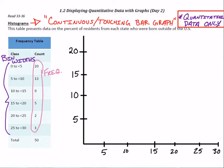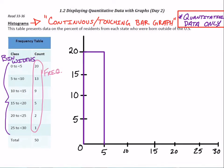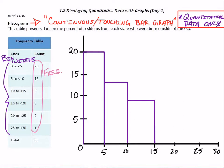Let's make our first bar — it goes all the way up to 20. From 0 to 5, there's the first bar for the histogram. Then 5 to 10 goes up to 13. And then 10 to 15, we go up to 9, just below the 10. 15 to 20 has only 5 states, so frequency is 5. 20 to 25 has 2 states, and then 1 state in the 25 to 30 range.